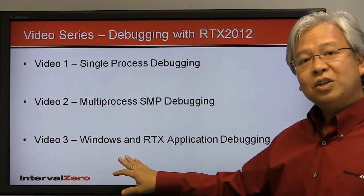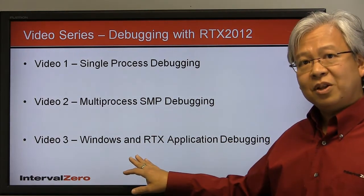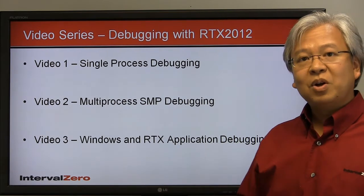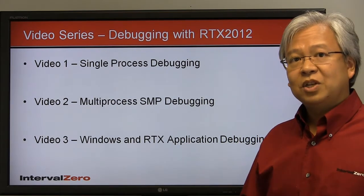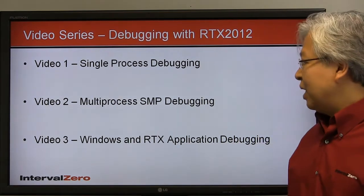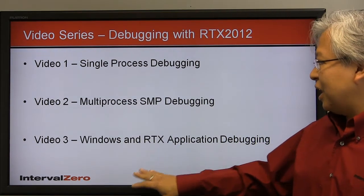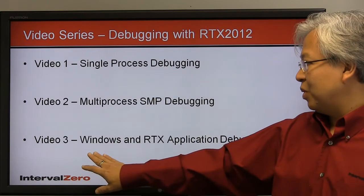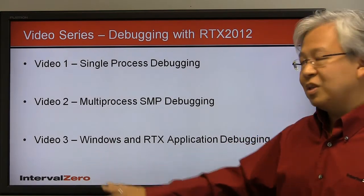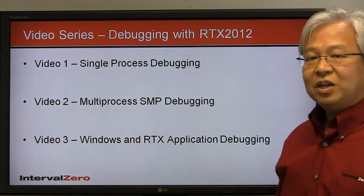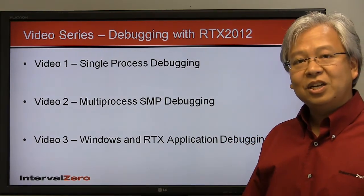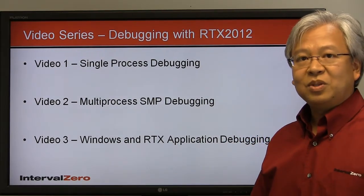Here in video three, we're going to do something similar — use multiple instances of Visual Studio. This time, we're going to attach and debug both a Windows application as well as a real-time application in RTX, both together.